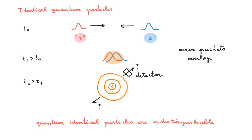What this means is that identical classical and quantum particles behave in radically different ways. Identical classical particles are distinguishable, whereas identical quantum particles are indistinguishable.